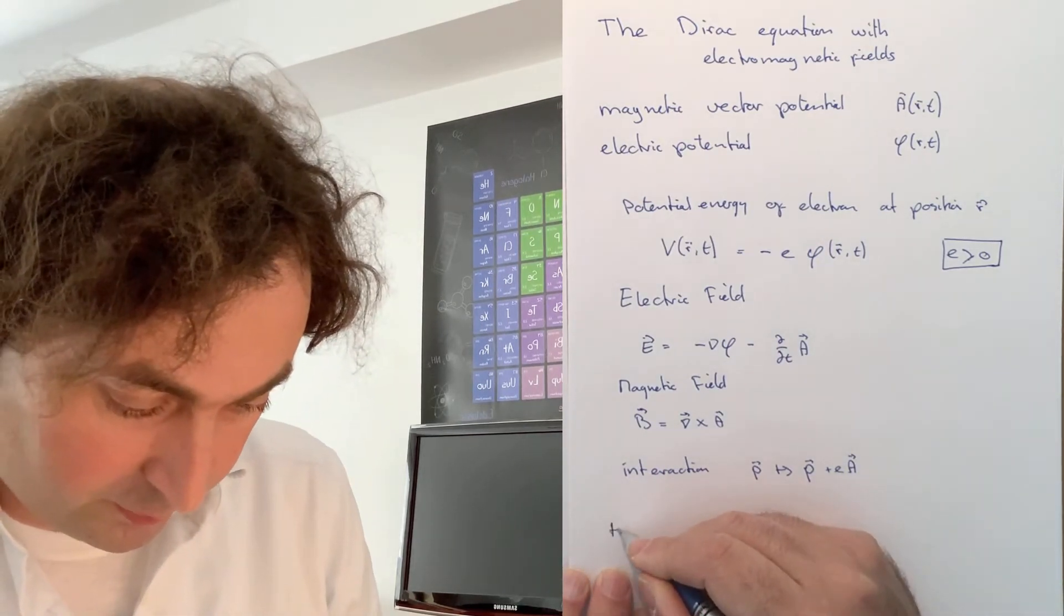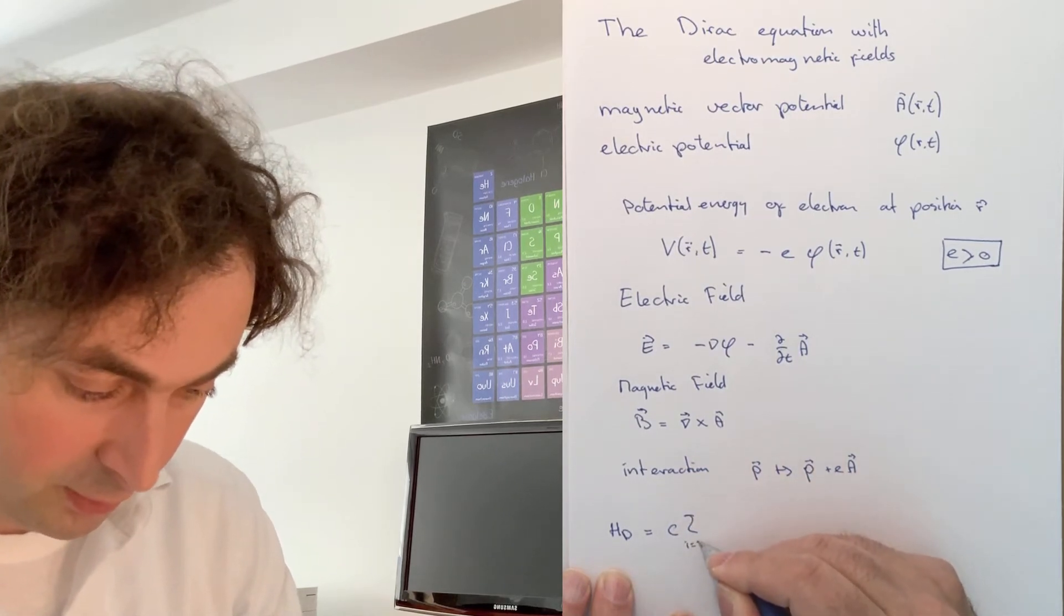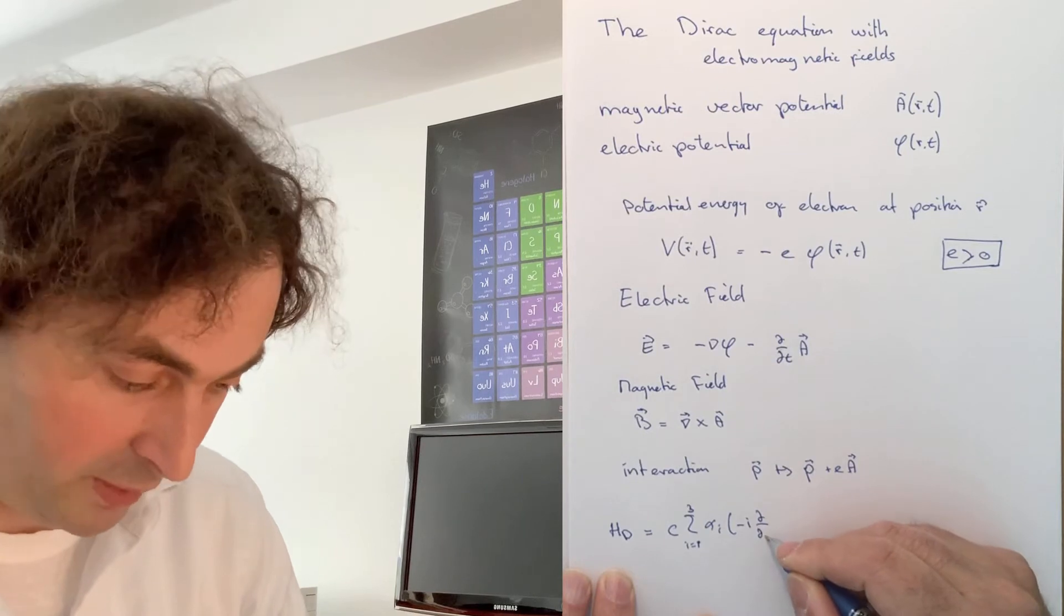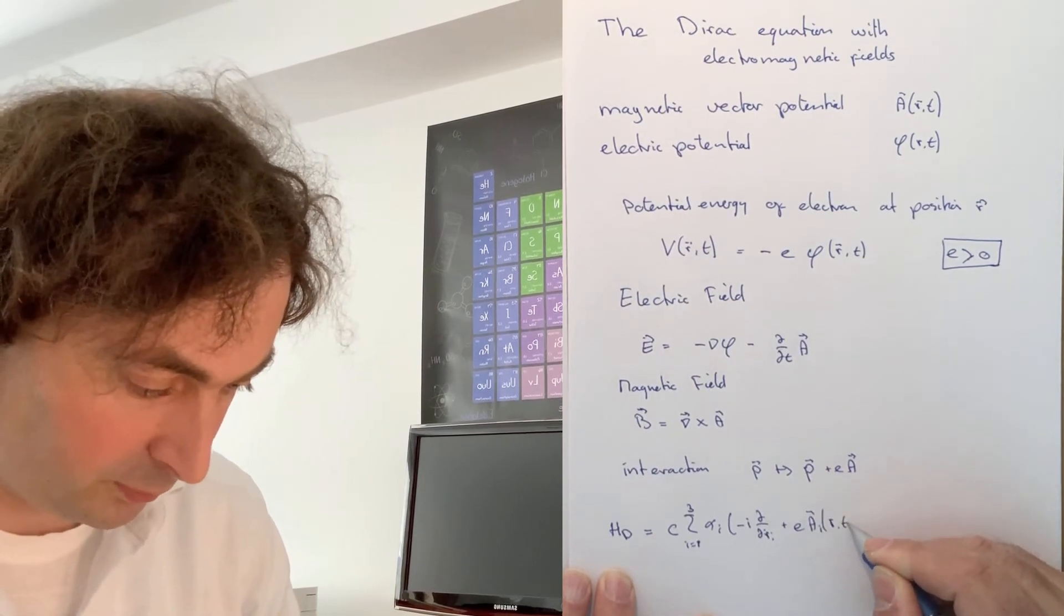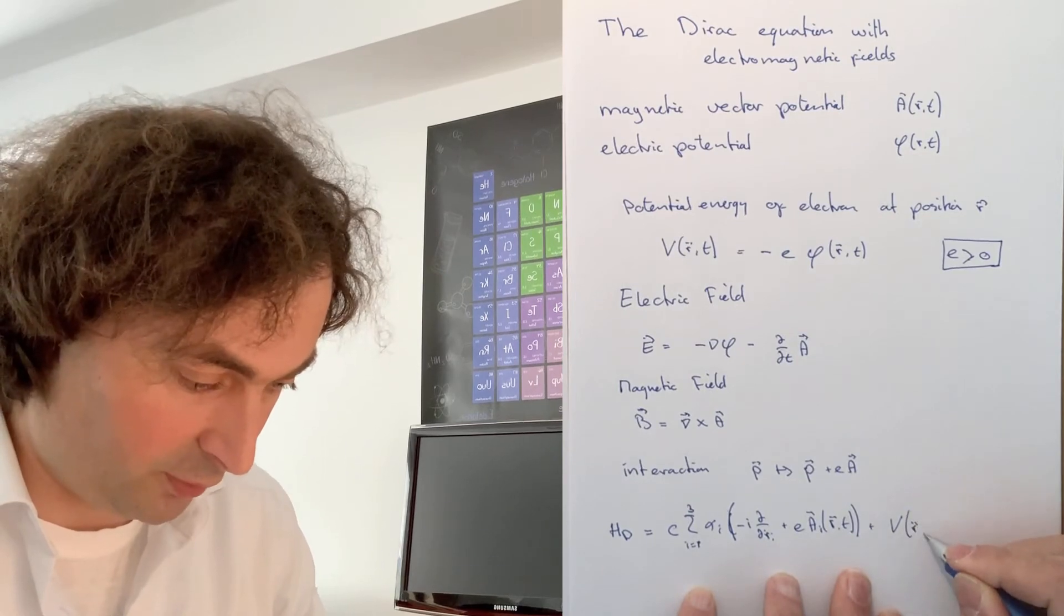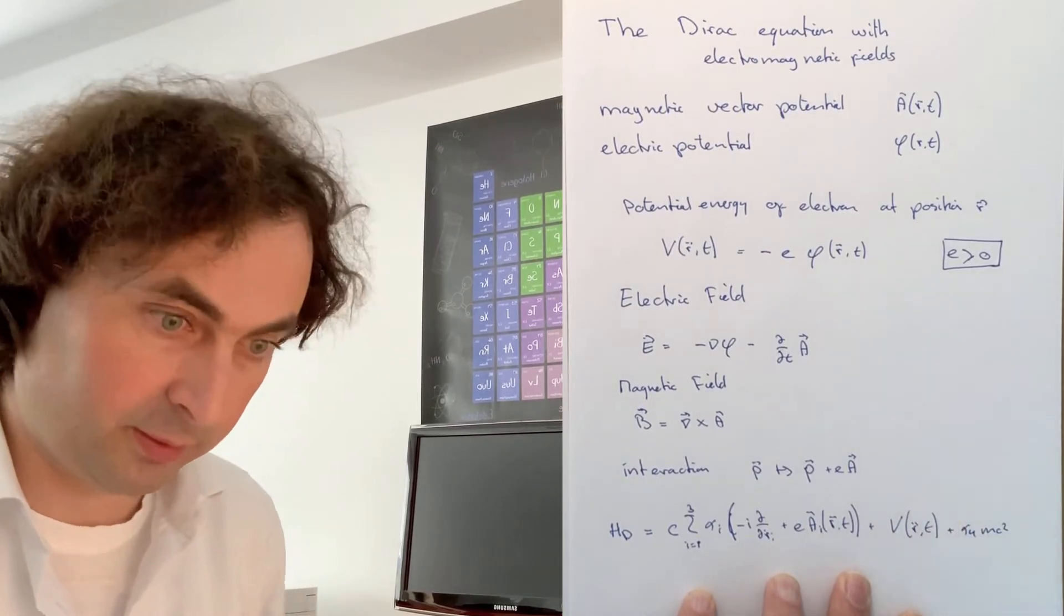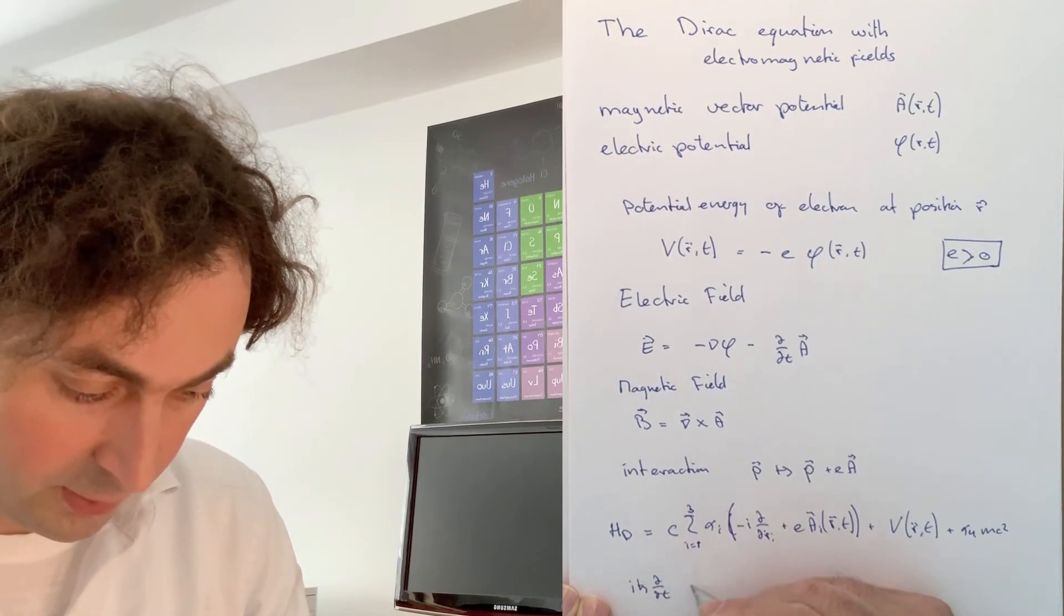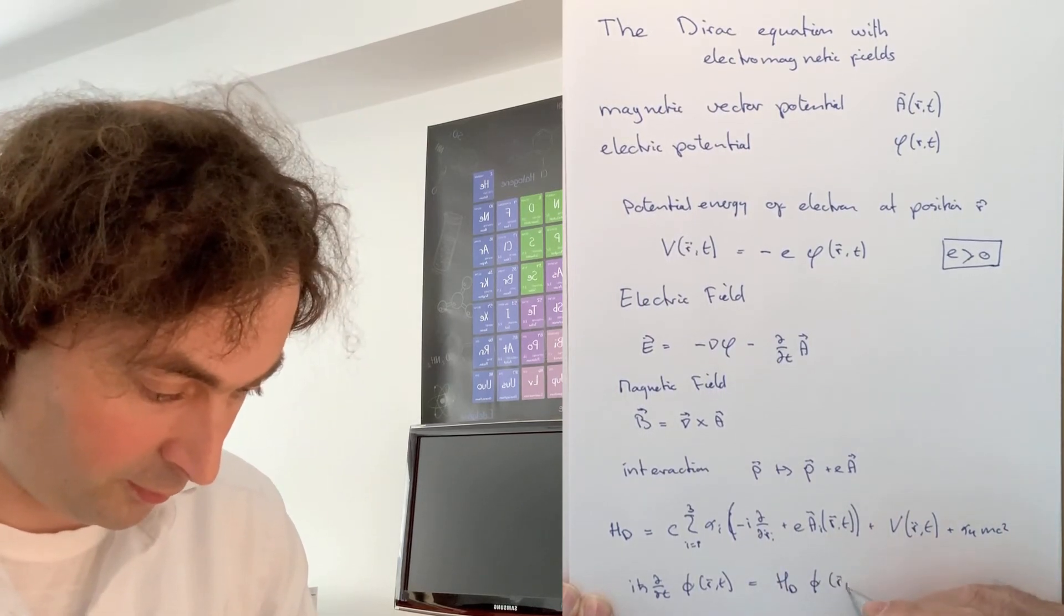So our Dirac Hamiltonian becomes c, the speed of light, times a sum over the spatial coordinates of the momentum plus e times the magnetic vector potential, plus the potential energy that we have due to the electric potential, plus alpha 4 mc squared, the rest mass. And we have, as for the Schrödinger equation, i h-bar d/dt times the wave function equals the Dirac Hamiltonian times the wave function.